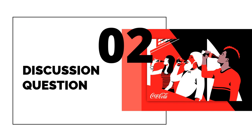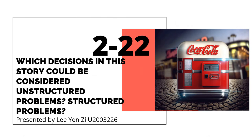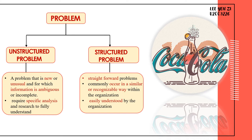Thank you Li Xiu Wei for presenting. My name is Li Yen Zi, and today we are going to discuss about the questions of the case application. There are four questions in this case application, and I will discuss question one: which decisions in this story could be considered unstructured problems, and which are structured problems? There are two types of problems in business, which are unstructured problems and structured problems. An unstructured problem is a problem that is new or unusual and for which information is ambiguous or incomplete.